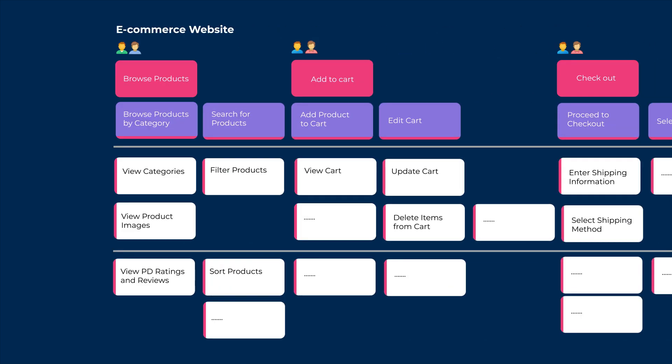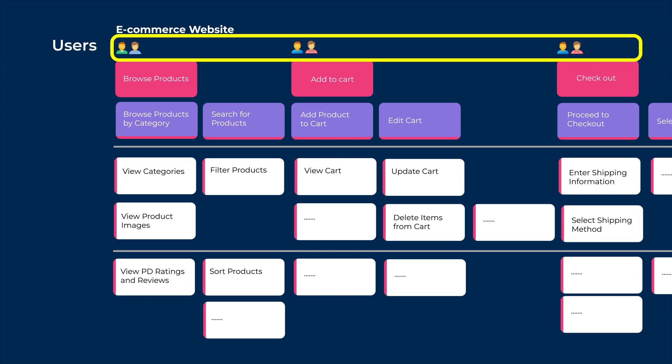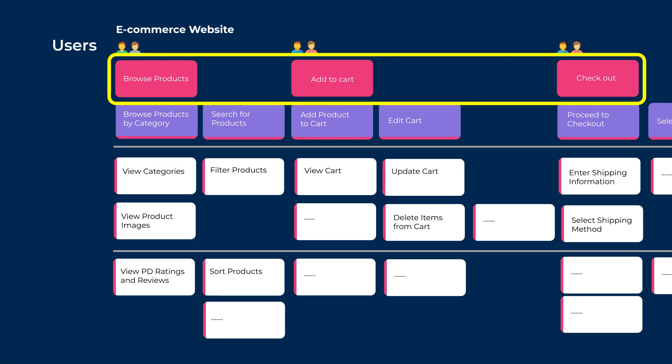Here is the structure of a user story map. First, we have the users. A map tells a story about a type of person doing something to reach a goal. Make sure to include them in your map along with a bit of information about them. Try using lightweight persona sketches to describe your user. The first row is the activities. Activities organize tasks done by similar people at a similar time to reach a goal. In Jira, this is called an epic.